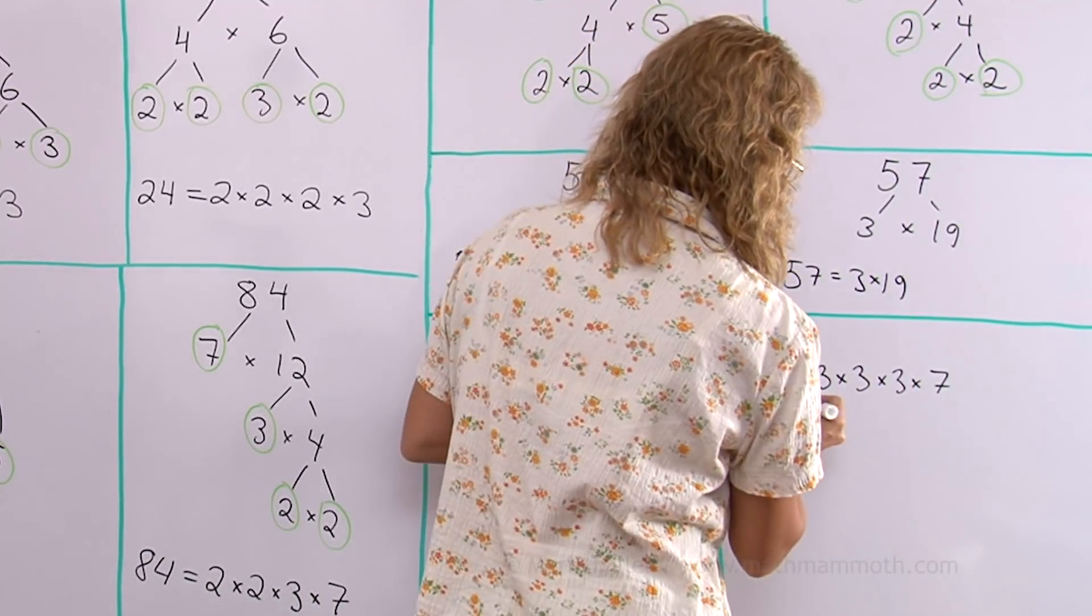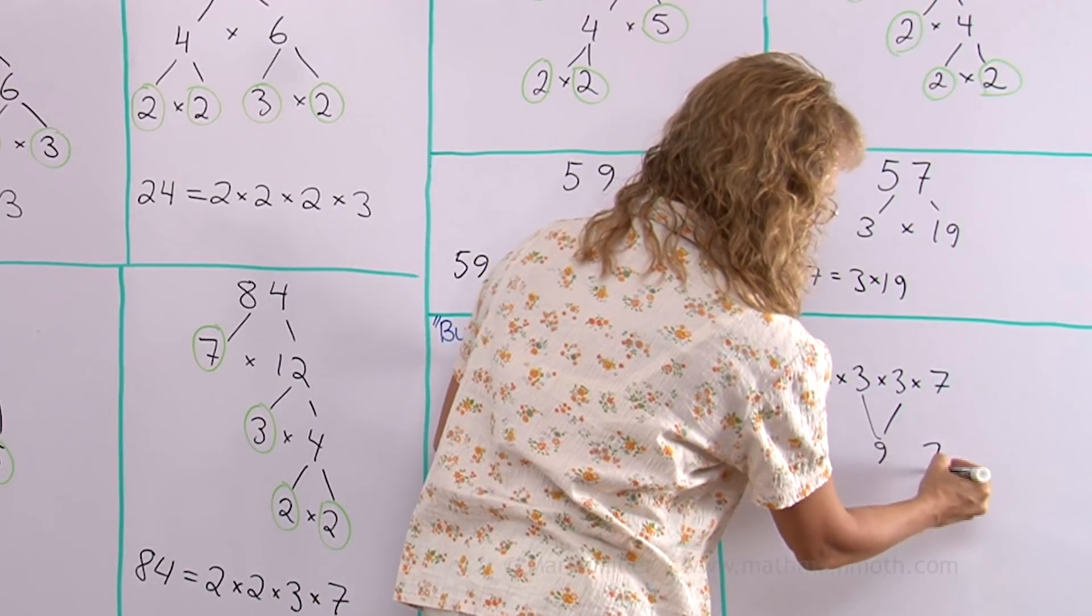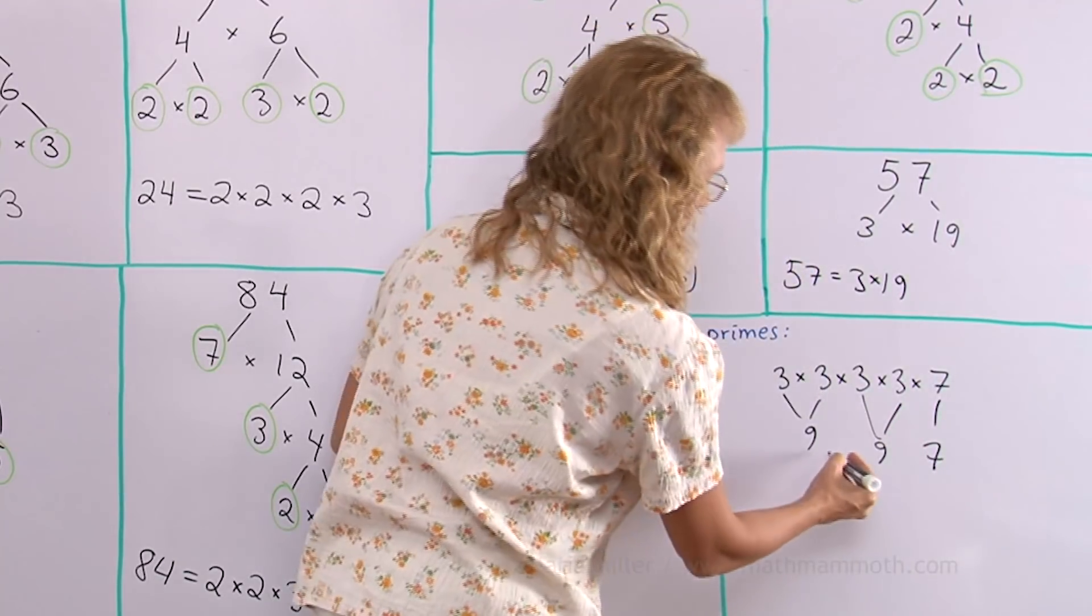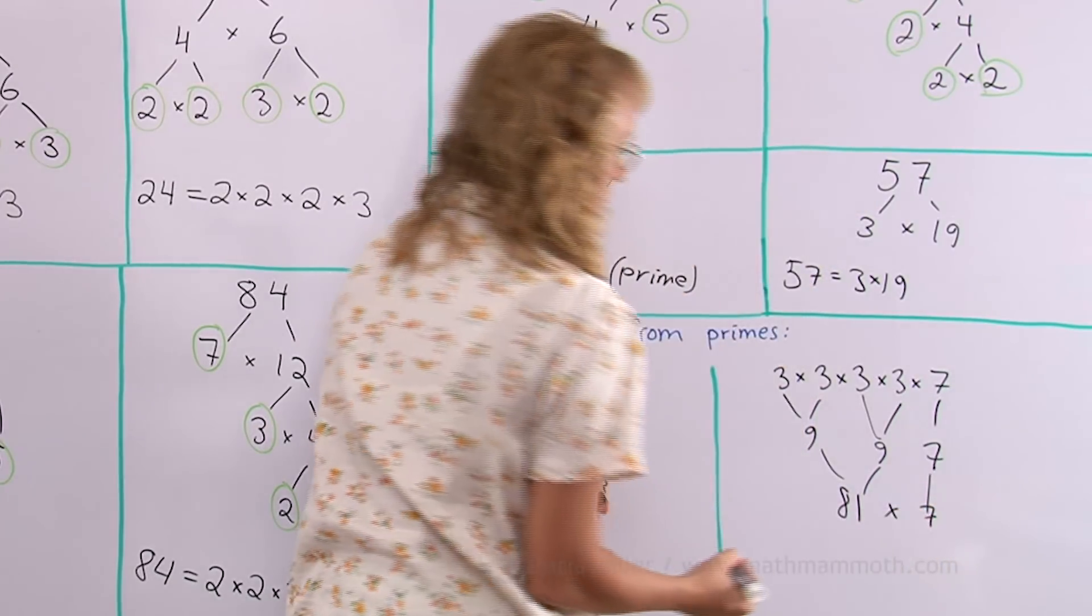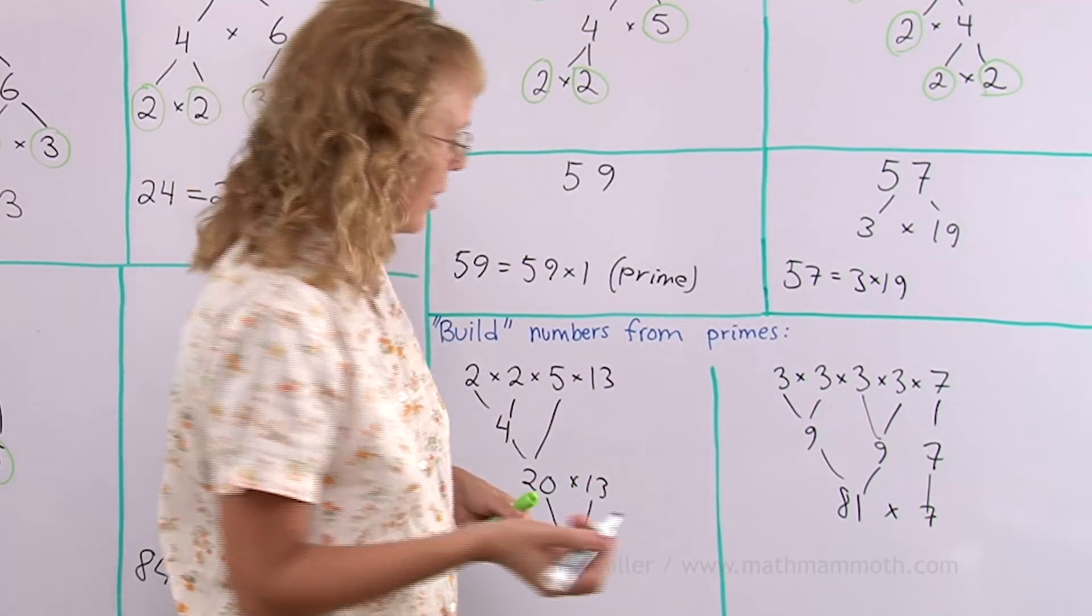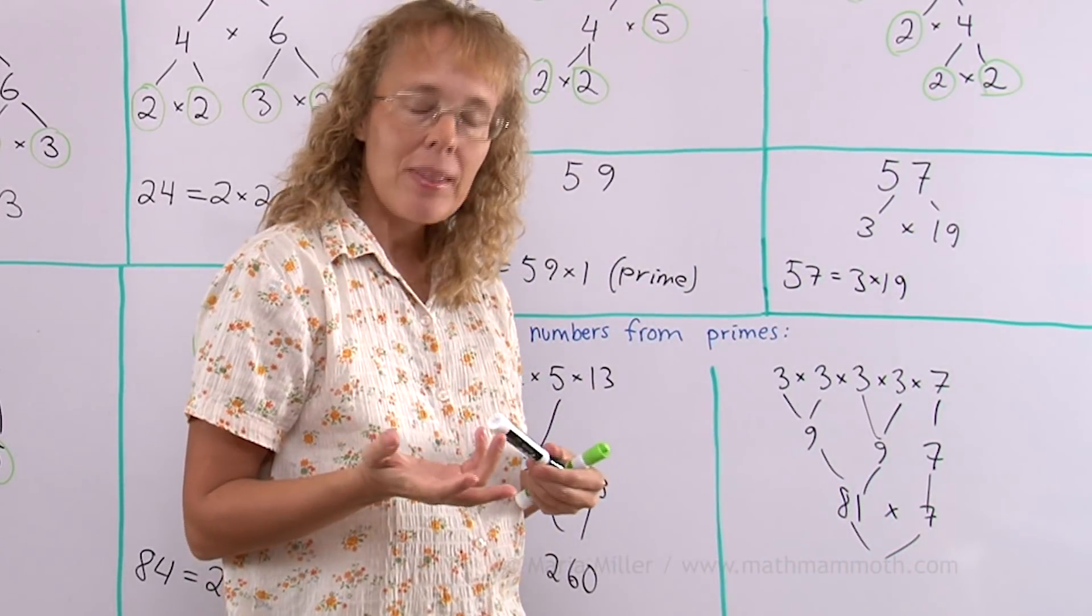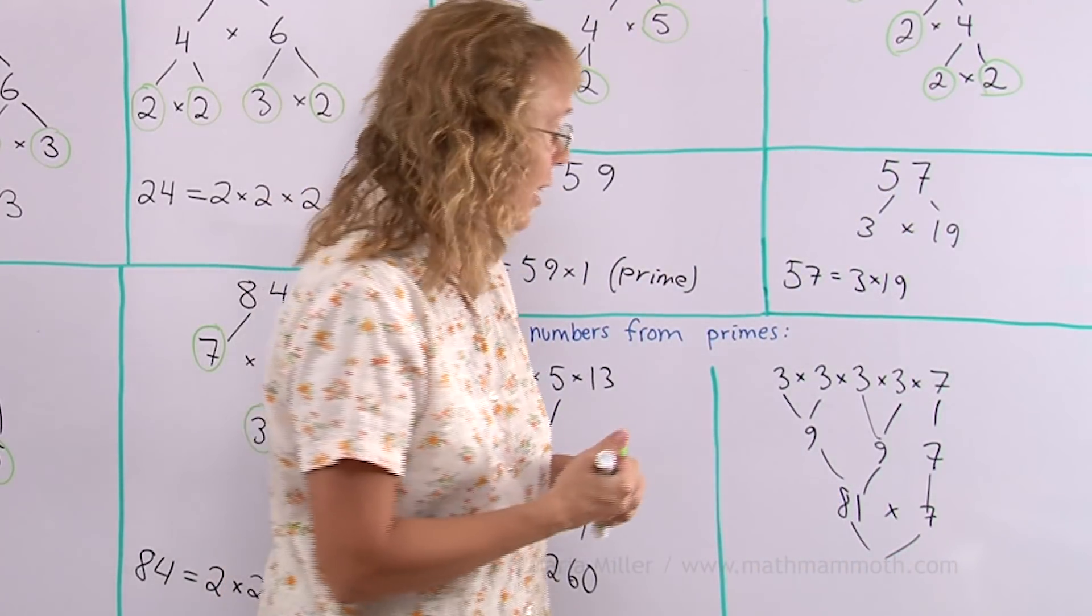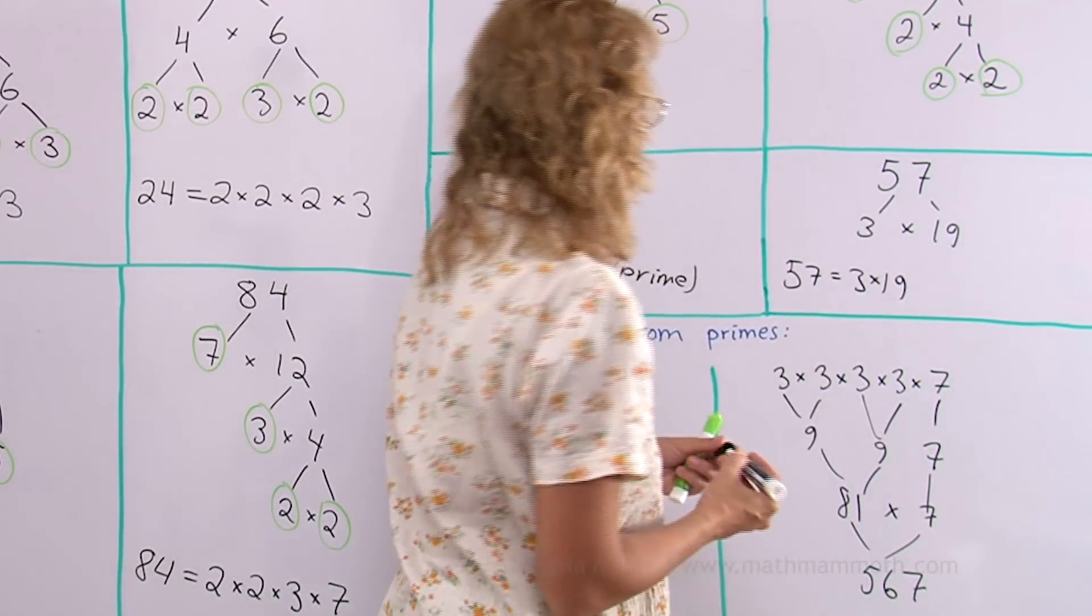Over here, I could go maybe 9, and then I'll take another 9 from here, then I have my 7, and then 9 times 9 would be 81, then I have the 7, and lastly I do 81 times 7. What's 80 times 7? That's 560. And then 1 times 7 is 7. So 567 is what I got out of this.